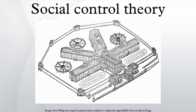Matza based his drift theory upon four observations: delinquents express guilt over their criminal acts; delinquents often respect law-abiding individuals; a line is drawn between those they can victimize and those they cannot; and delinquents are not immune to the demands of conforming. Although this theory of drift has not been widely supported by empirical tests, it remains a key idea in criminology despite not answering why some conform and others don't.